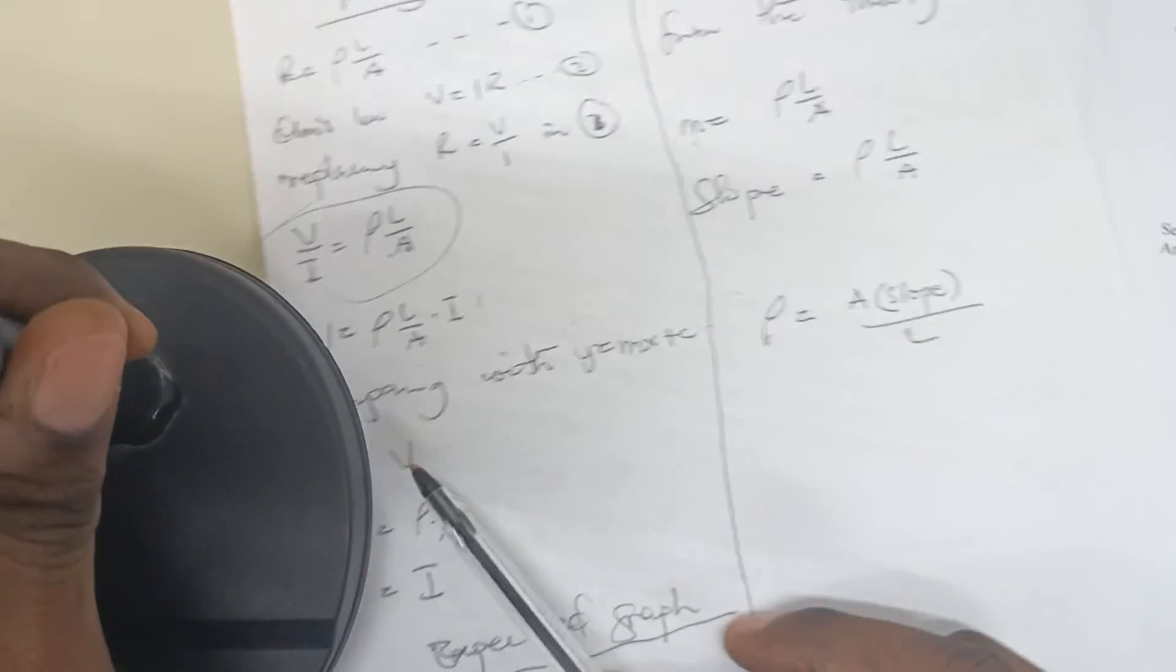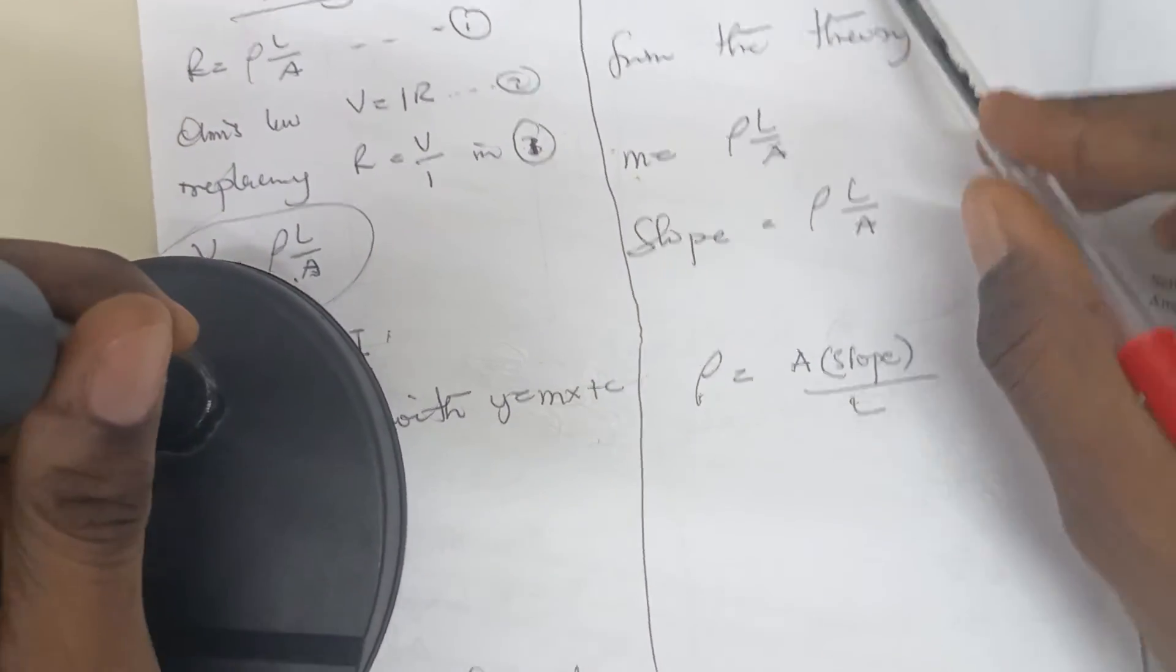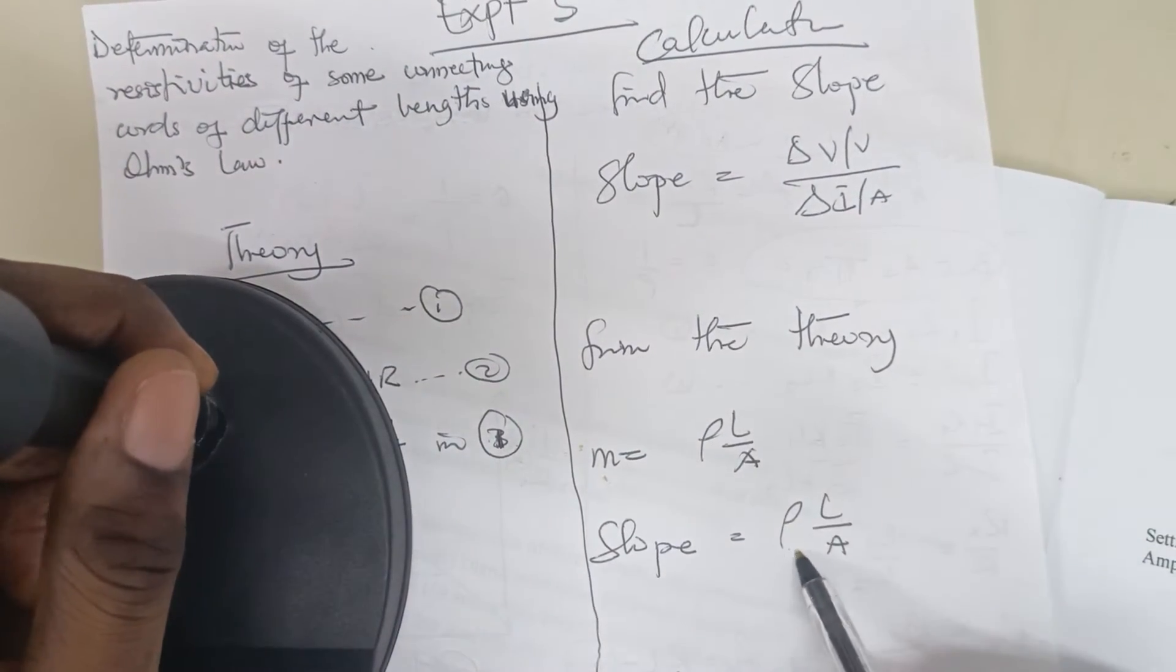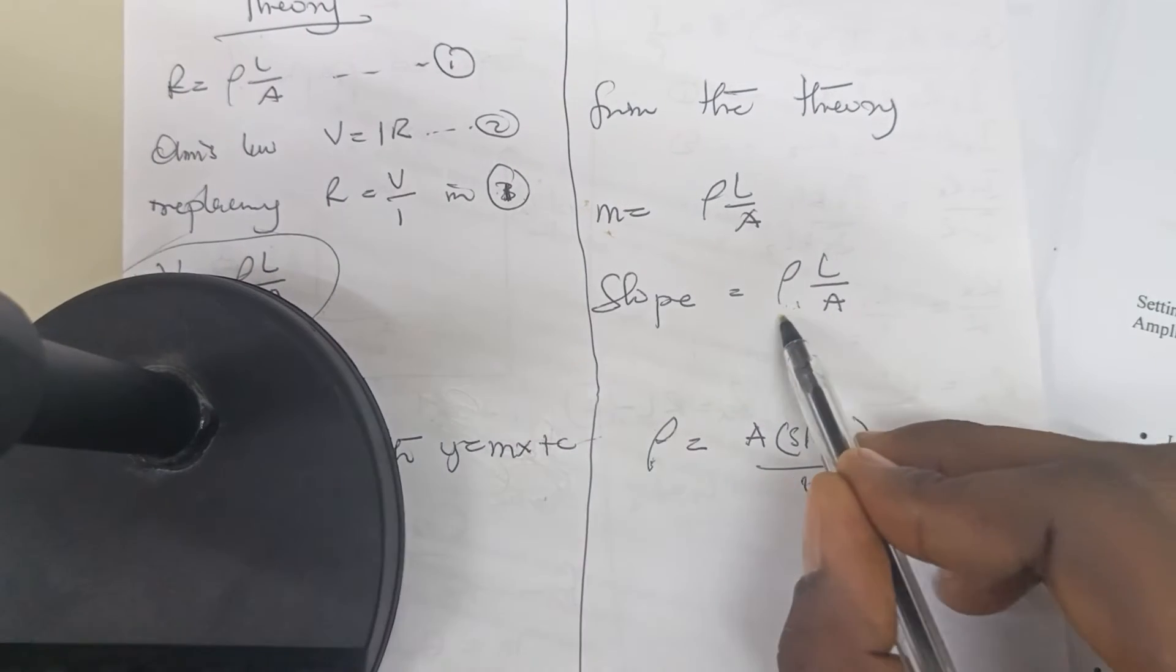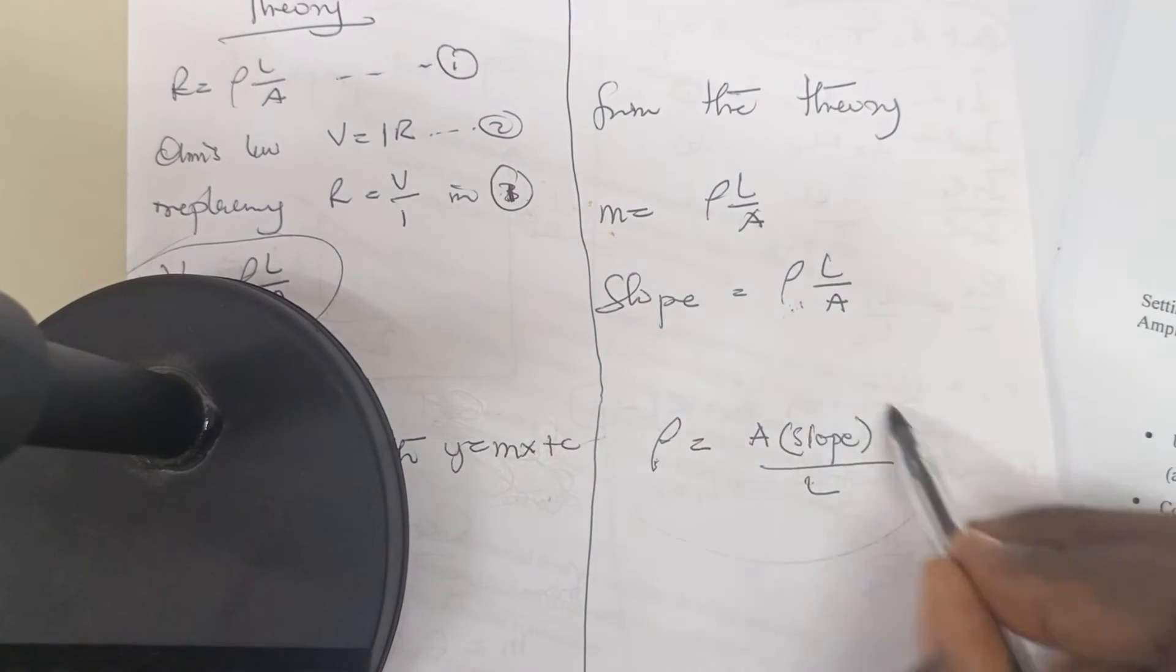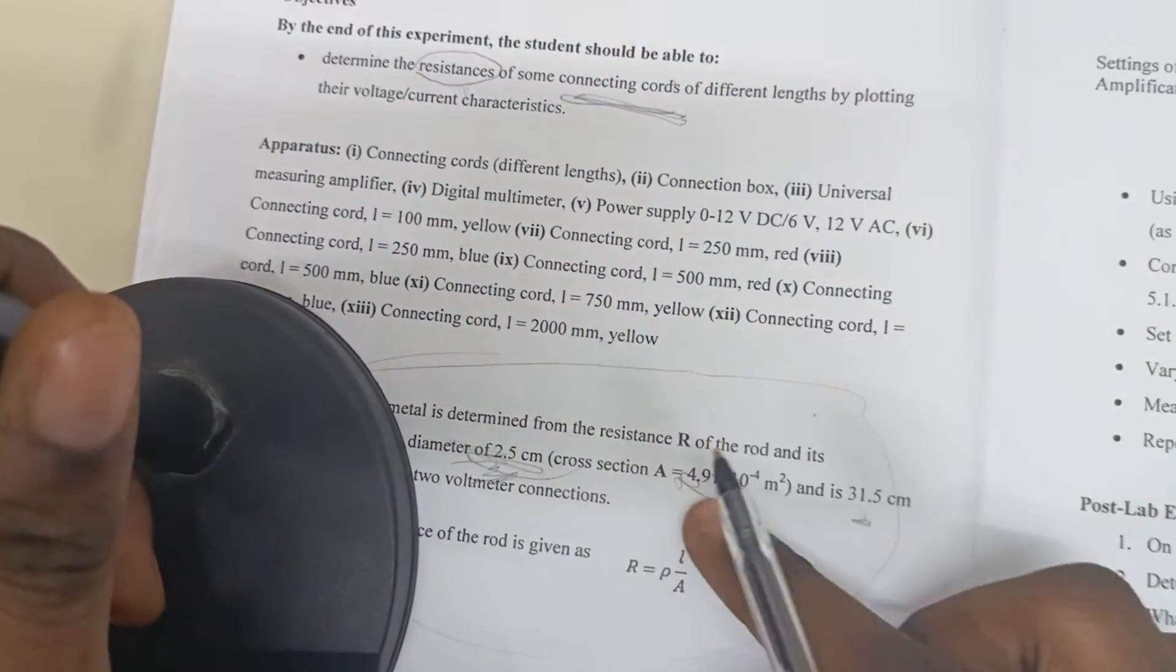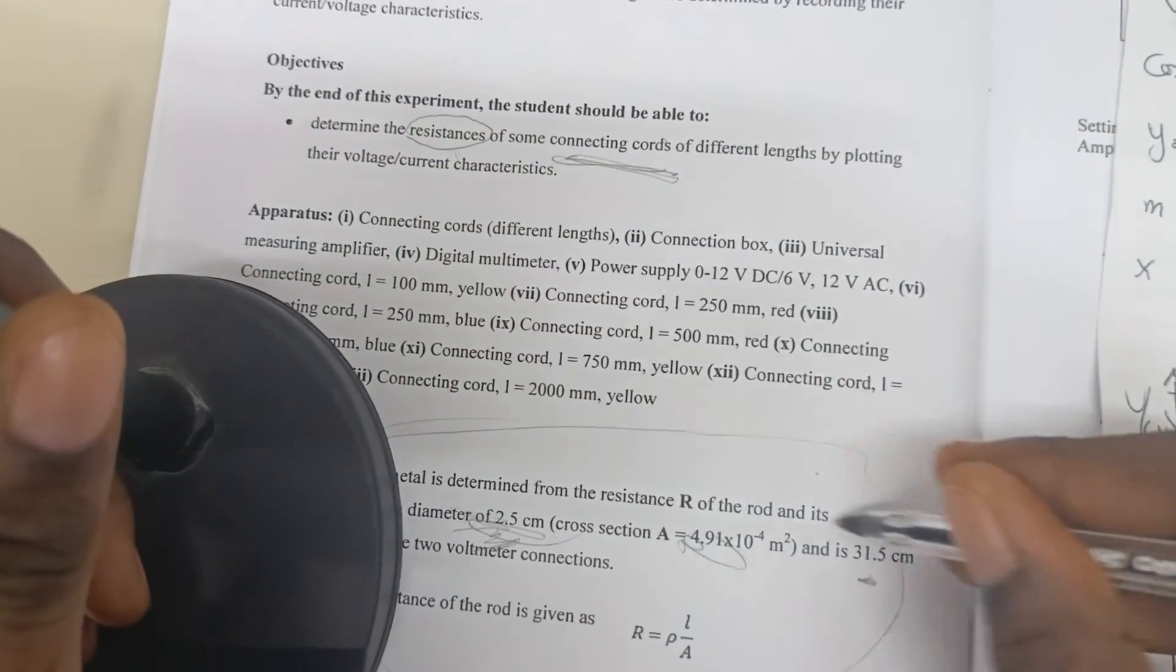Equals to this. So we equate the value of the slope we had to this, then we can make resistivity the subject and find the resistivity using the area and length, which has been given in the book. But there's a correction.